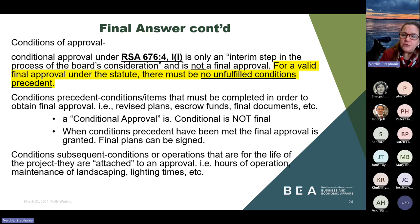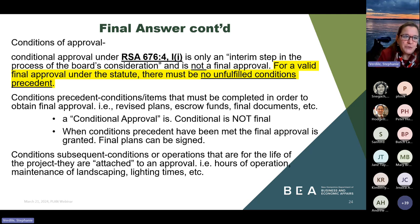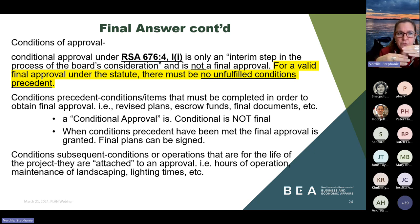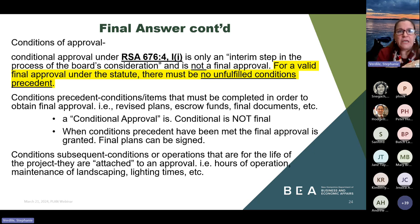Conditions of approval — there are different terms. Conditional approval and final approval are different — don't let people say they've got a conditional approval as if that's final. Conditions precedent are conditions or items that need to be completed first in order to obtain final approval. For example, for a Dunkin' Donuts approval downtown: conditions precedent would be to submit final plans, submit escrows, get your state permits — those types of things have to be completed before final approval can be granted. Conditions subsequent are conditions that run with the life of the development — for example, turning off the parking lot lights at 10 o'clock at night. You need those for enforcement and you need those for clarity.